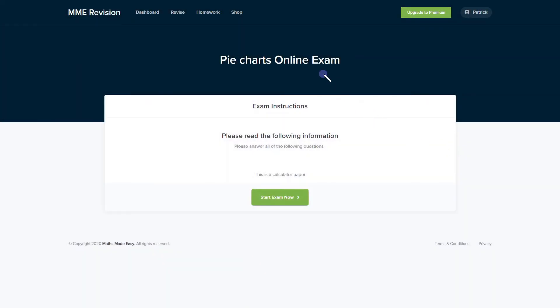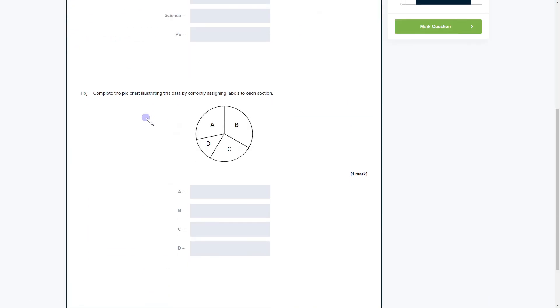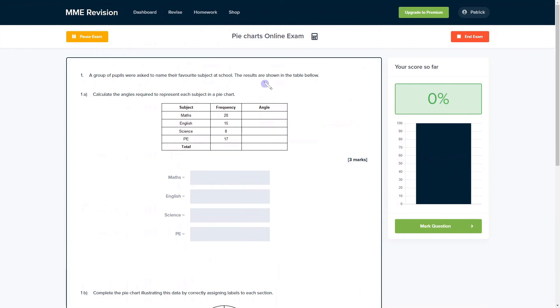If you're feeling strong on this topic then you can test your strength with our pie charts online exam. It's available through our revision platform and if you take the test you'll find loads of different questions to have a go at, variety of different question types and you'll receive instant feedback on everything. So if you want to find out where your strengths and weaknesses lie this is a really good way of doing so. If you're interested and you want to take the exam then you can click the link below and it will take you straight there.